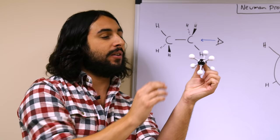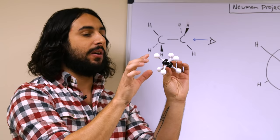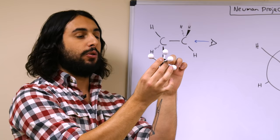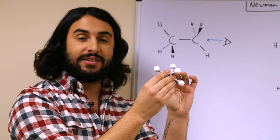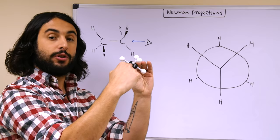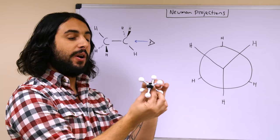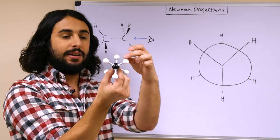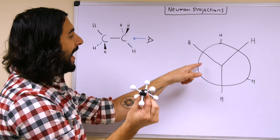We're placing ourselves in the board looking this way, and looking at this model, we're looking directly down this bond. We want to understand something about the orientation of these groups on this carbon in relation to the groups projecting from the back carbon. So in order to draw and analyze it, we're going to draw something called a Newman projection. When we look at a Newman projection, we are looking directly at this front carbon, and that is what is represented by the circle — the circle is the front carbon. Now because we're looking directly at this carbon, the carbon behind it and the bond connecting them cannot be seen.